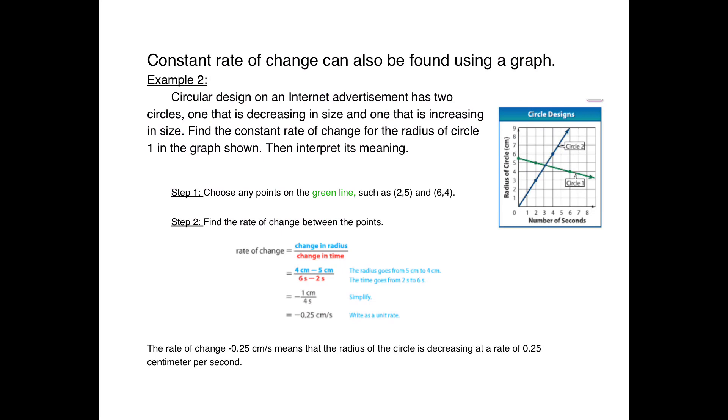Now we're talking about constant rate of change on a graph. A circular design on an internet advertisement has two circles. One circle is decreasing in size - a smaller one - and one is increasing in size, getting bigger. Find the constant rate of change with the radius of circle one in the graph.